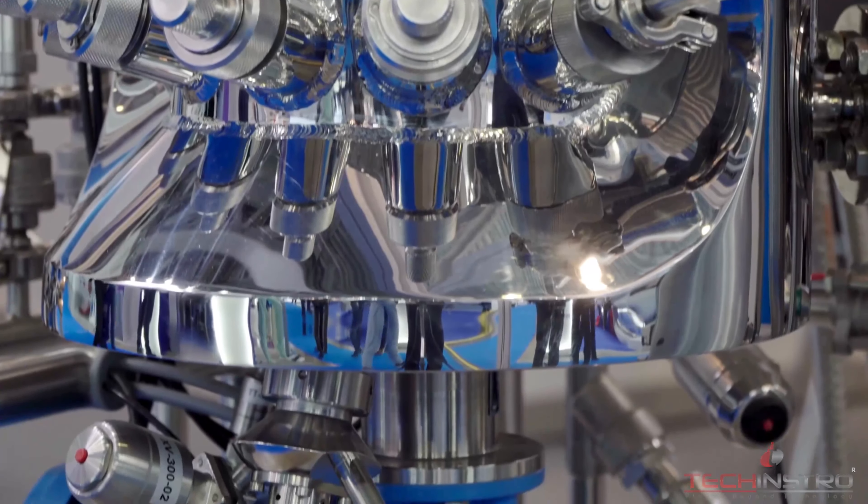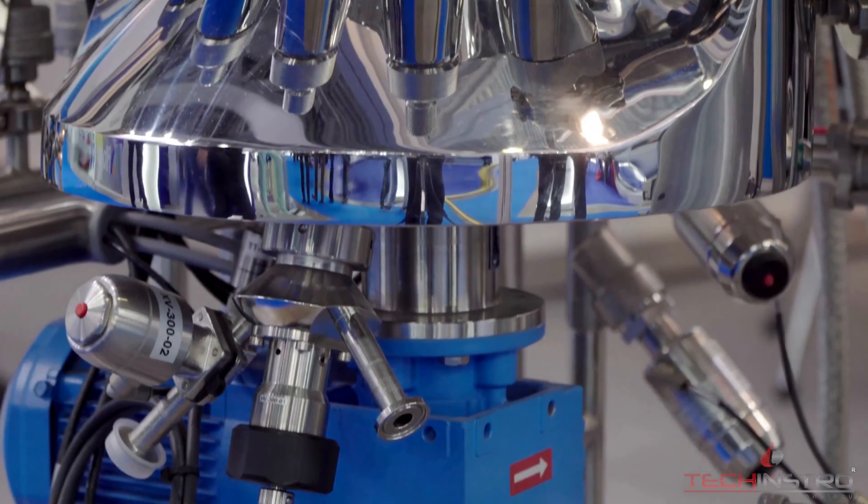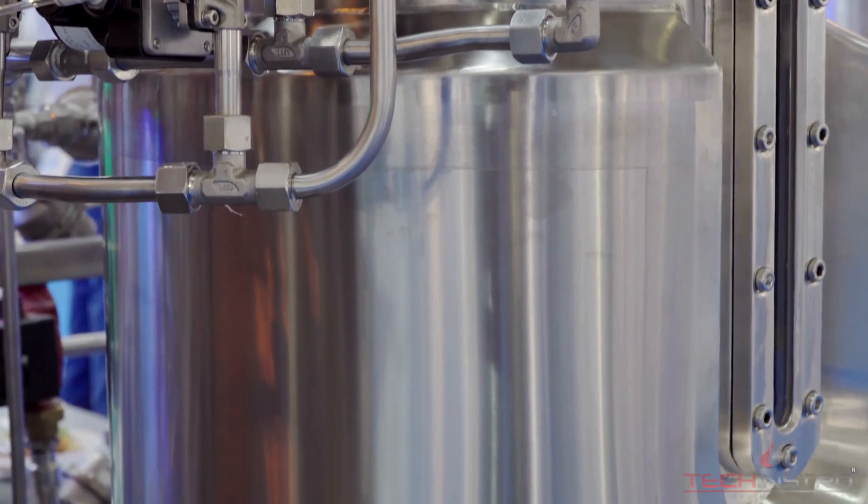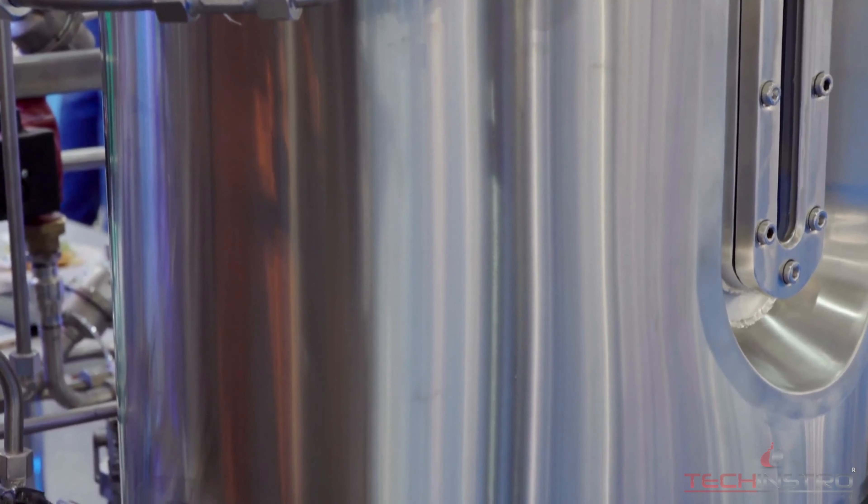Let's understand design and construction. Autoclave reactors are typically made of high quality materials such as stainless steel or other alloys that can withstand high pressure and temperature. The reactor is designed to seal tightly to prevent the escape of gases or liquids during the reaction.